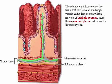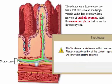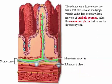The submucosa is loose connective tissue that carries blood and lymph vessels. At its deep boundary lies a network of intrinsic neurons, called the submucosal plexus, that serves the digestive system.